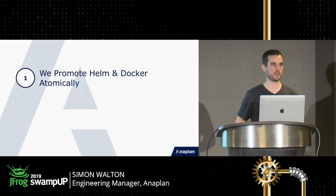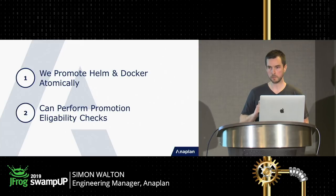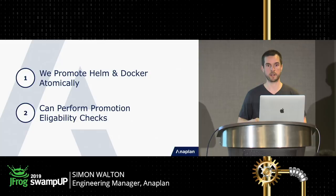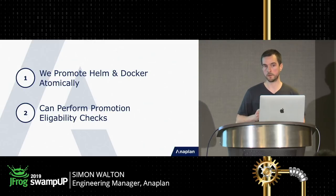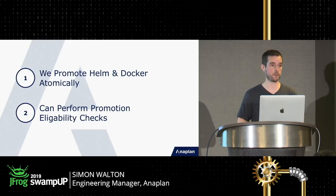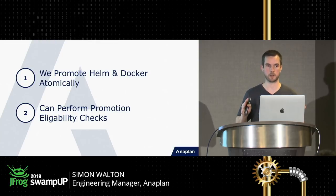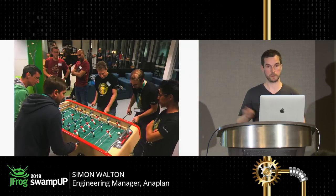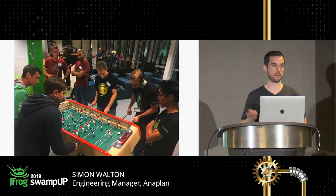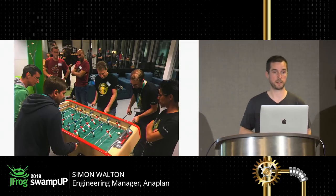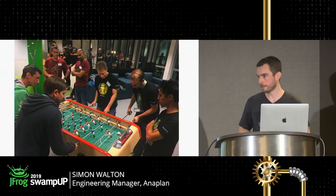We also wanted to enforce a variety of eligibility checks on the promotion. Because of the nature of Jenkins shared pipeline libraries, the user ultimately has the ability to call things they maybe shouldn't, and we wanted to verify that the promotion was correct and met our compliance and auditing regulations. We had a Zoom call with the people at JFrog France and asked if this was a bad idea. They said no, it's actually quite a decent idea, and they encouraged us to develop a plugin and feed it back to the community.